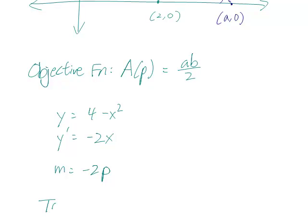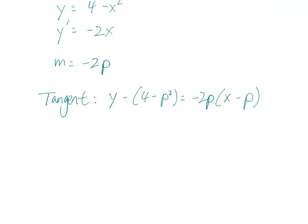Using the point slope form, we can just write down the equation of the tangent line. The y coordinate of the point of tangency is 4 minus p squared. That equals minus 2p times x minus p. We can simplify that a little bit to y minus 4 plus p squared equals minus 2px plus 2p squared.